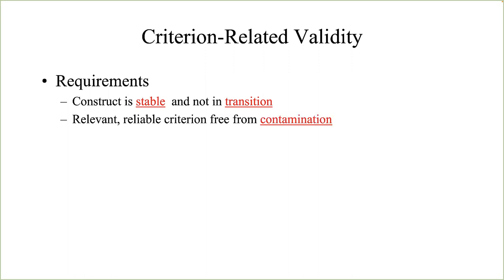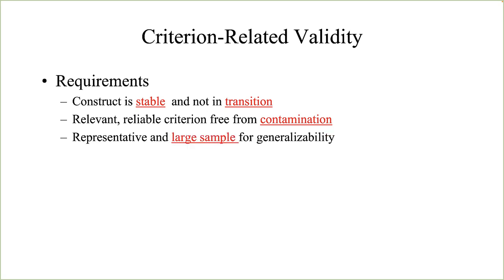A relevant, reliable criterion free from contamination must be available or feasible to develop. Criterion contamination arises when we measure things that should not be measured — for instance, an accountant's criterion is contaminated when we include the dollar value and number of customer returns, since that is not part of their accountant duties. It must also be possible to base the validation study on a sample representative of the people and jobs to which results will be generalized. Big samples have less error — big samples are good.